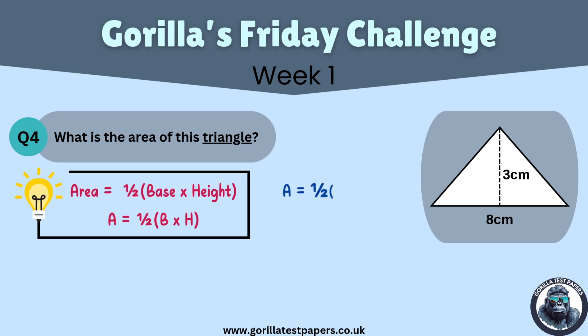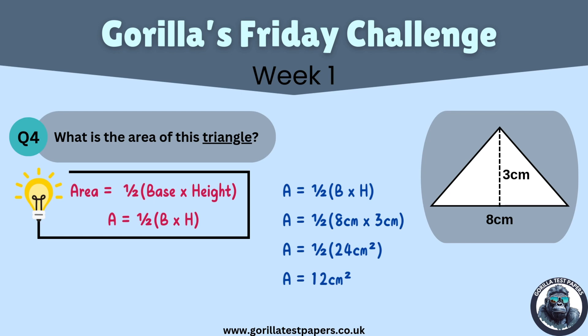Now we take the dimensions from the diagram and put them into the triangle area equation. Area equals half of 8cm multiplied by 3cm. After multiplying 8cm by 3cm, the equation becomes area equals half multiplied by 24cm squared, which is just another way of saying 24cm squared divided by 2. Therefore, the overall area of the triangle is 12cm squared.